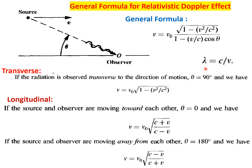For the transverse case, the angle between source and observer is 90°. Substituting cosθ = 0, the denominator becomes 1, giving ν = ν₀ · √(1 − v²/c²). For the longitudinal case with the observer approaching (θ = 0°): ν = ν₀ · √[(c + v)/(c − v)]. And when the observer is receding (θ = 180°): ν = ν₀ · √[(c − v)/(c + v)].